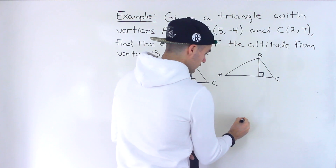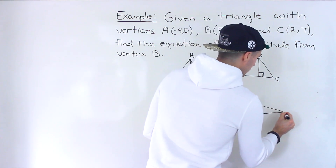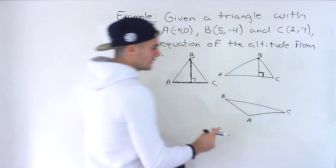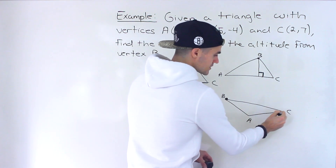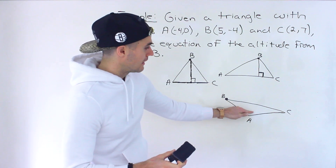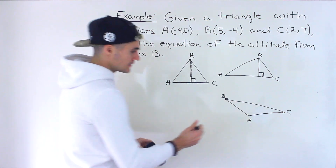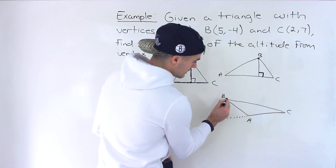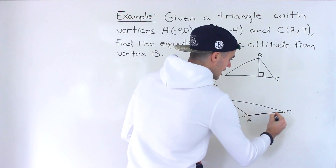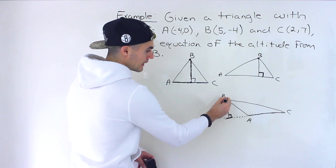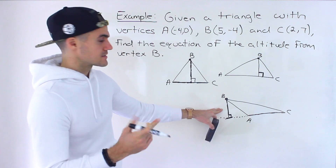Another common and confusing scenario is with an obtuse triangle. If you're finding the altitude from vertex B and it's impossible to draw a line from B to anywhere on side AC at a right angle, what happens is you extend side AC and then the altitude connects to that extended side perpendicularly. So even though it's not connecting with AC directly, you extend the side until you can draw a perpendicular line.